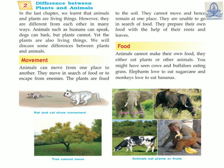Now, for food: animals cannot make their own food. They either eat plants or other animals. You may have seen cows and buffalos eating grass; elephants love to eat sugar cane and monkeys love to eat bananas. See in the picture how they are eating.